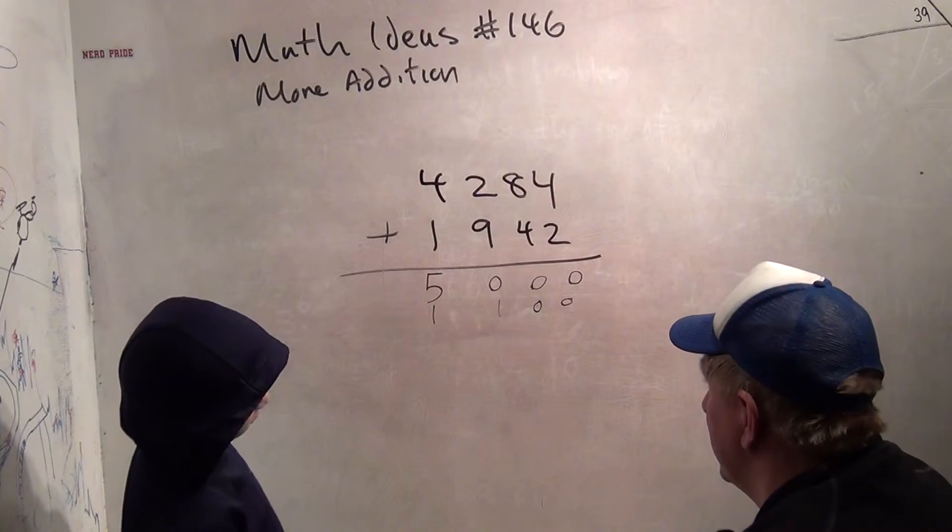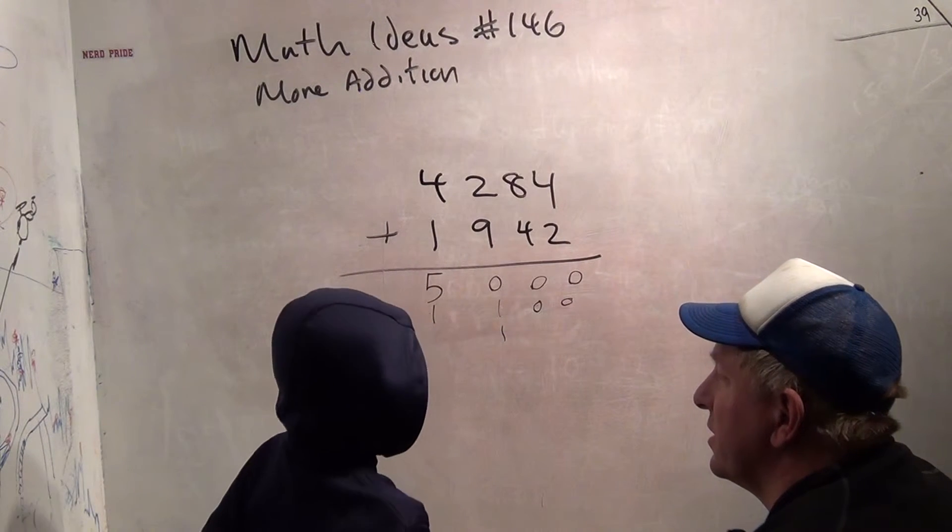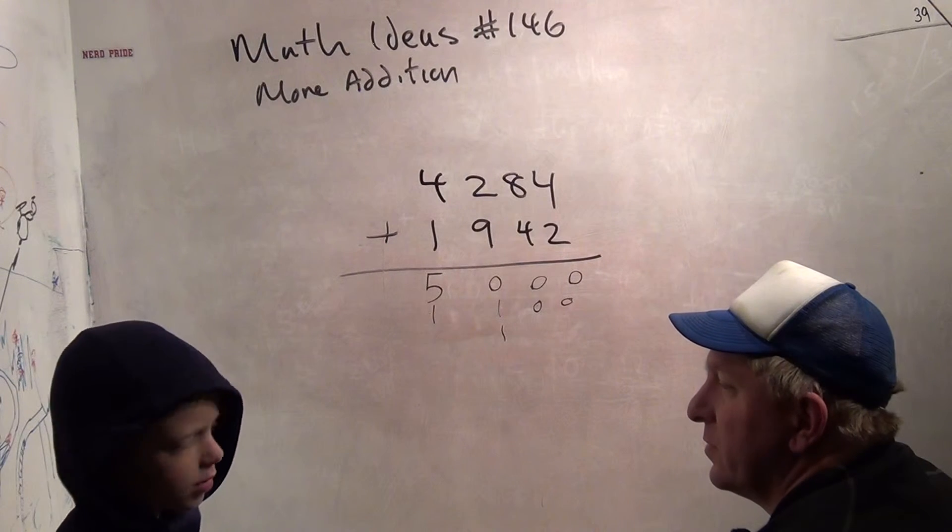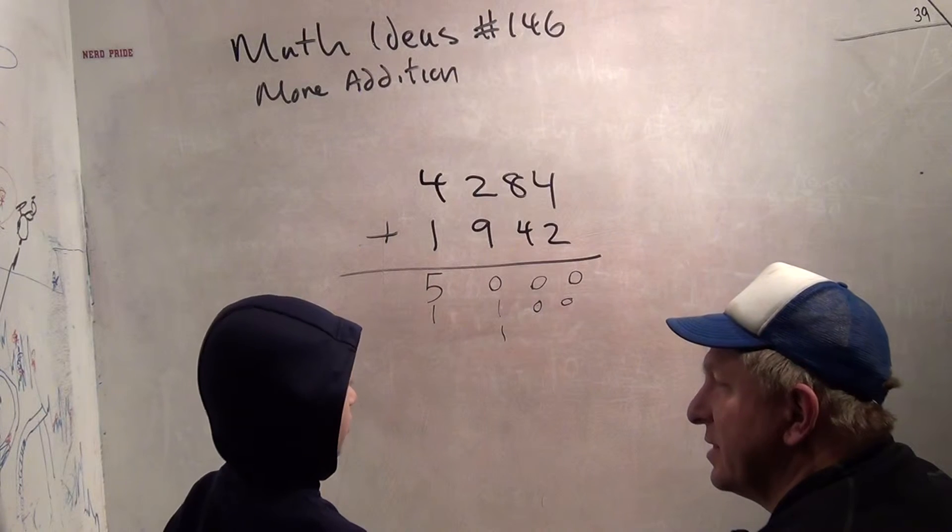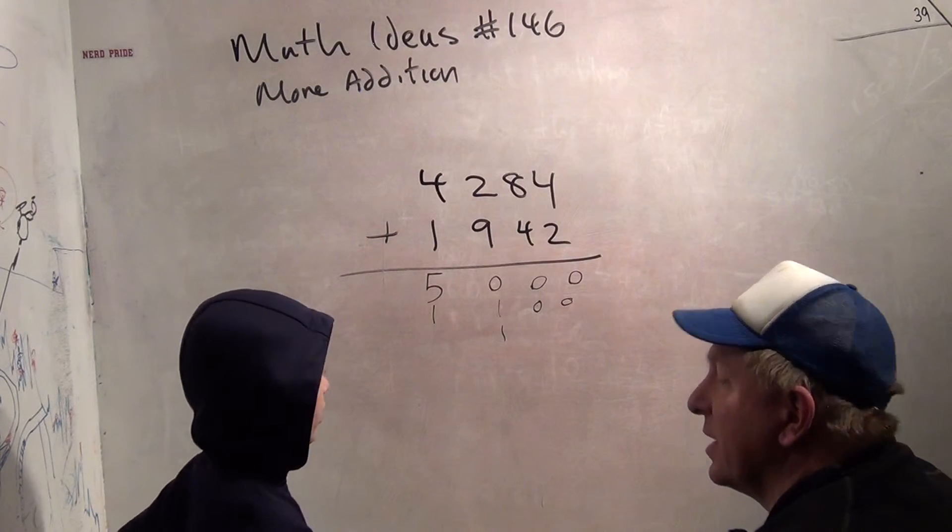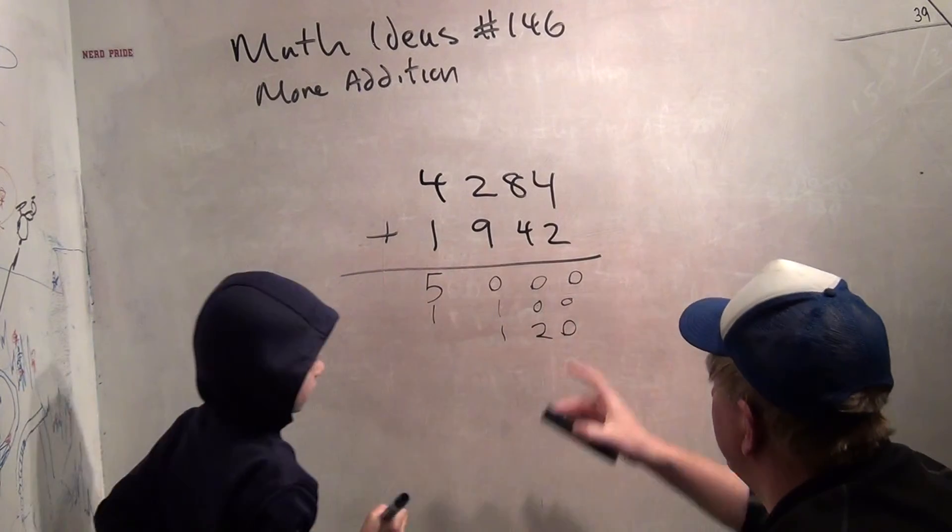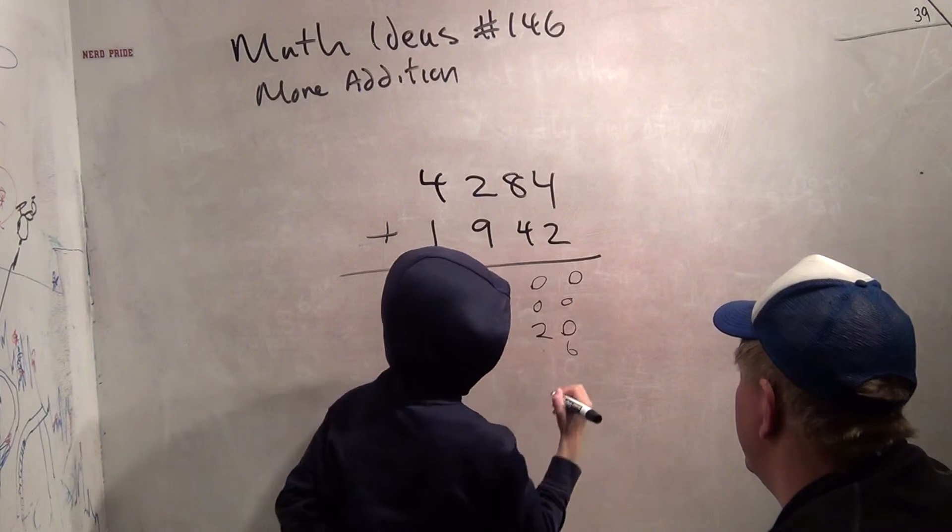80 plus 40 is 120. So there's your 100. There's your 20. And then 4 plus 2 is 6. Where does that 6 go? There.